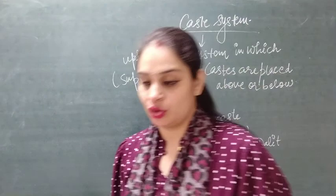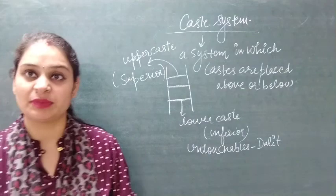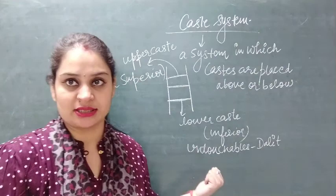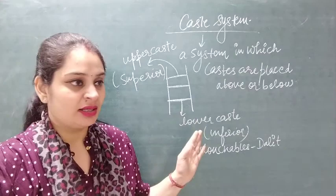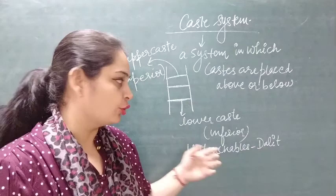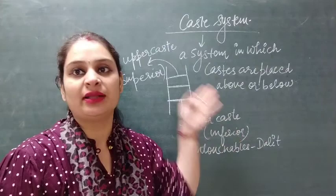The caste system is the main reason behind discrimination against people — when we judge people on the basis of the work they perform. According to this, when we place different castes in different criteria, there remain some caste rules.